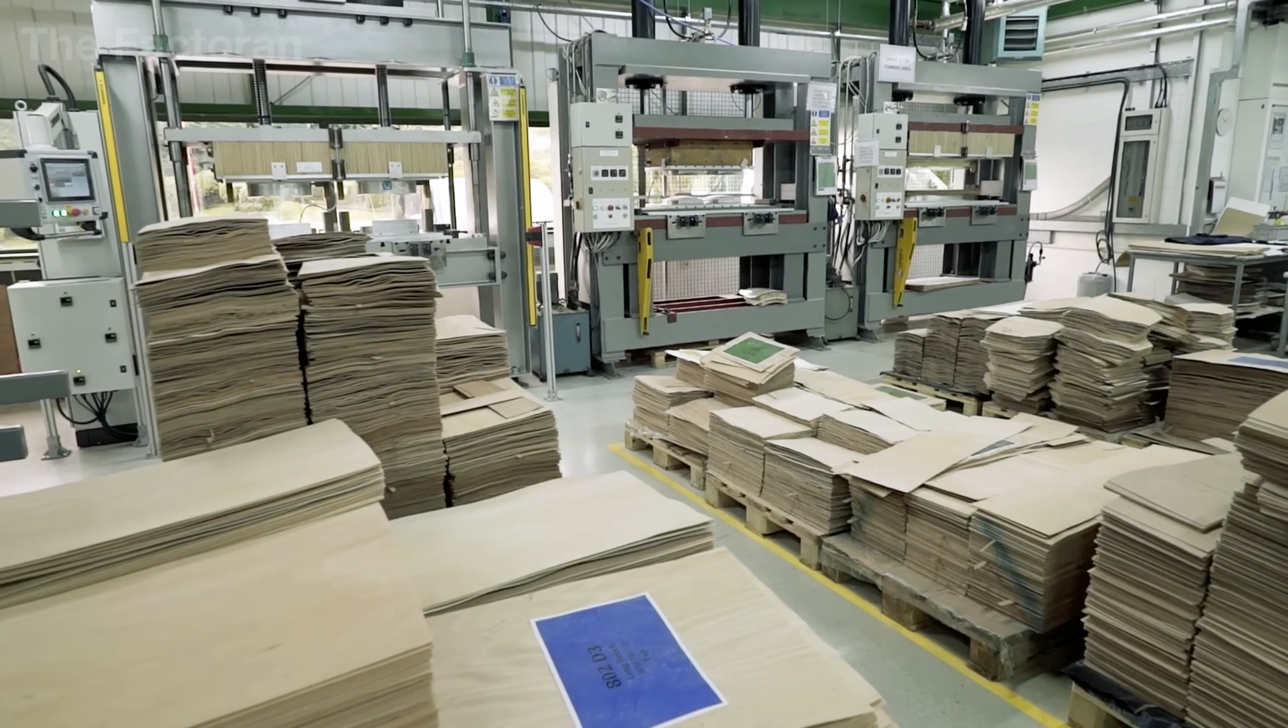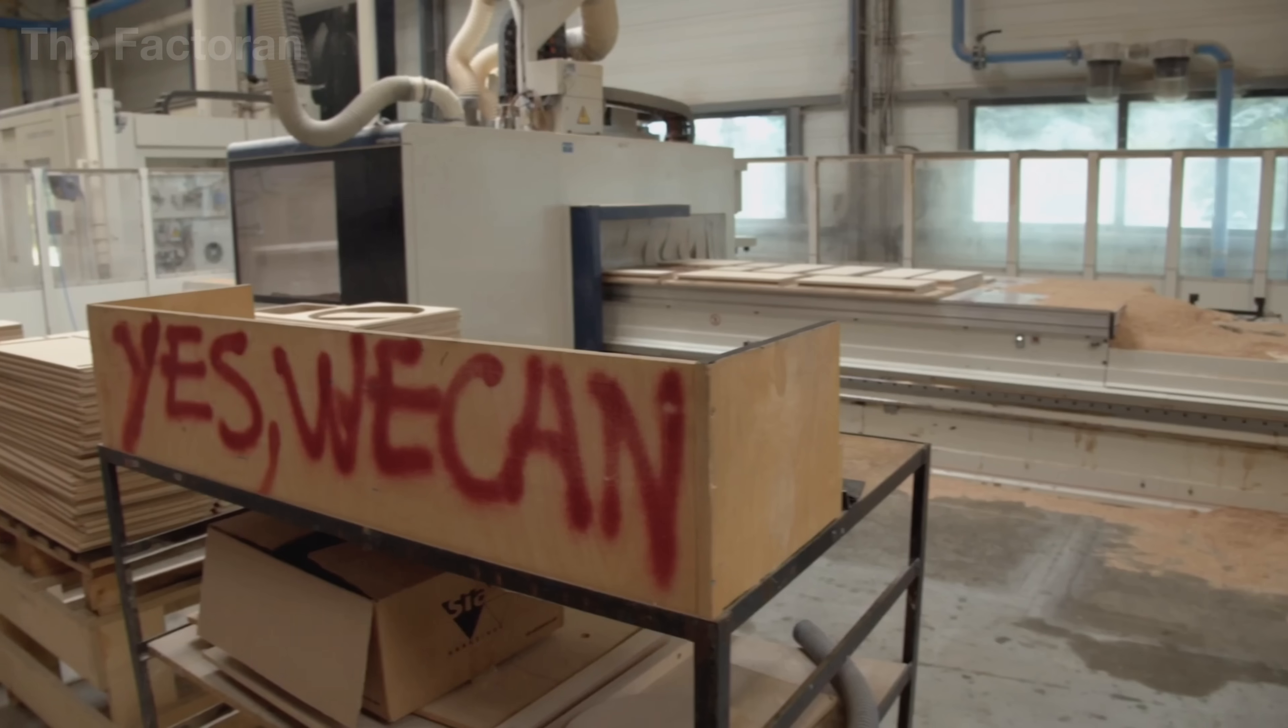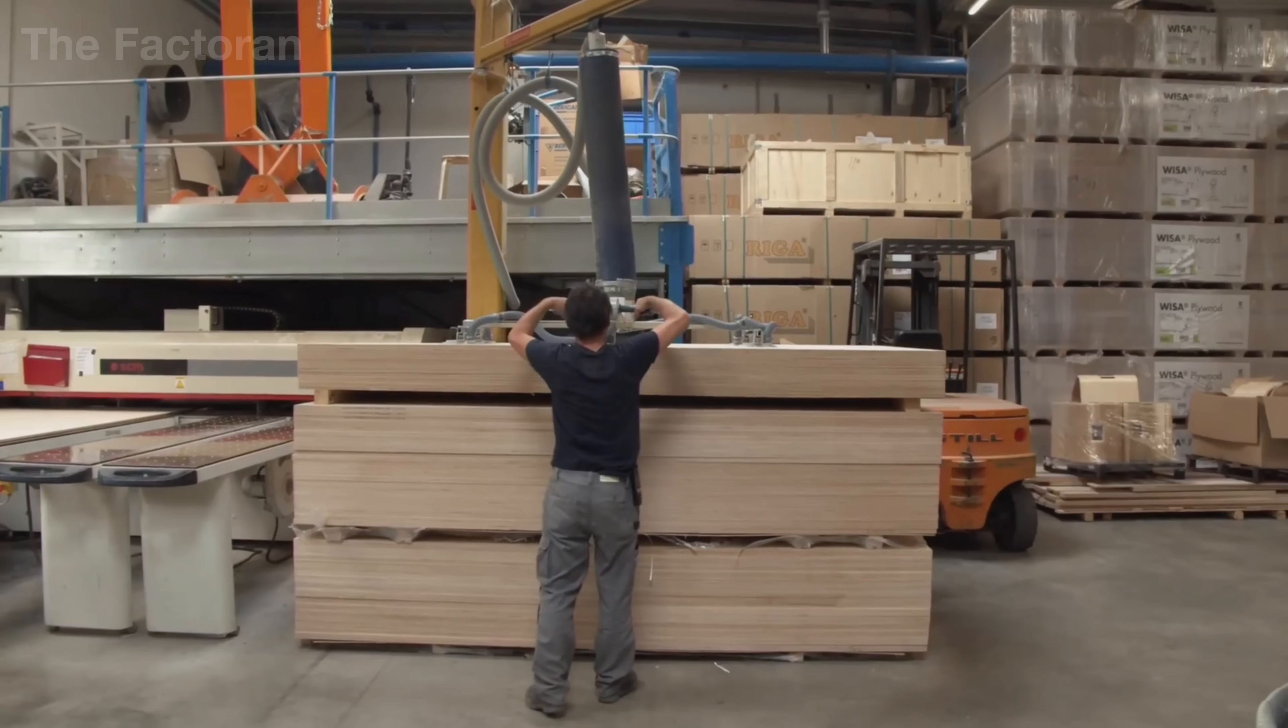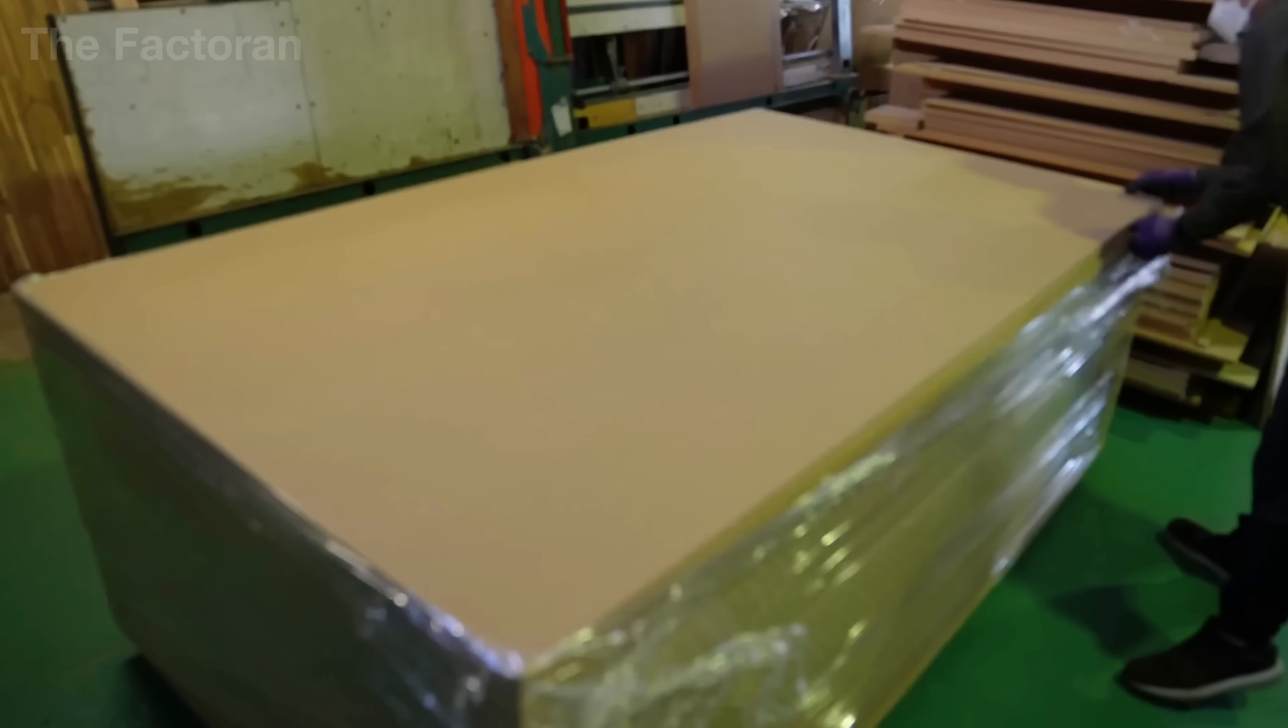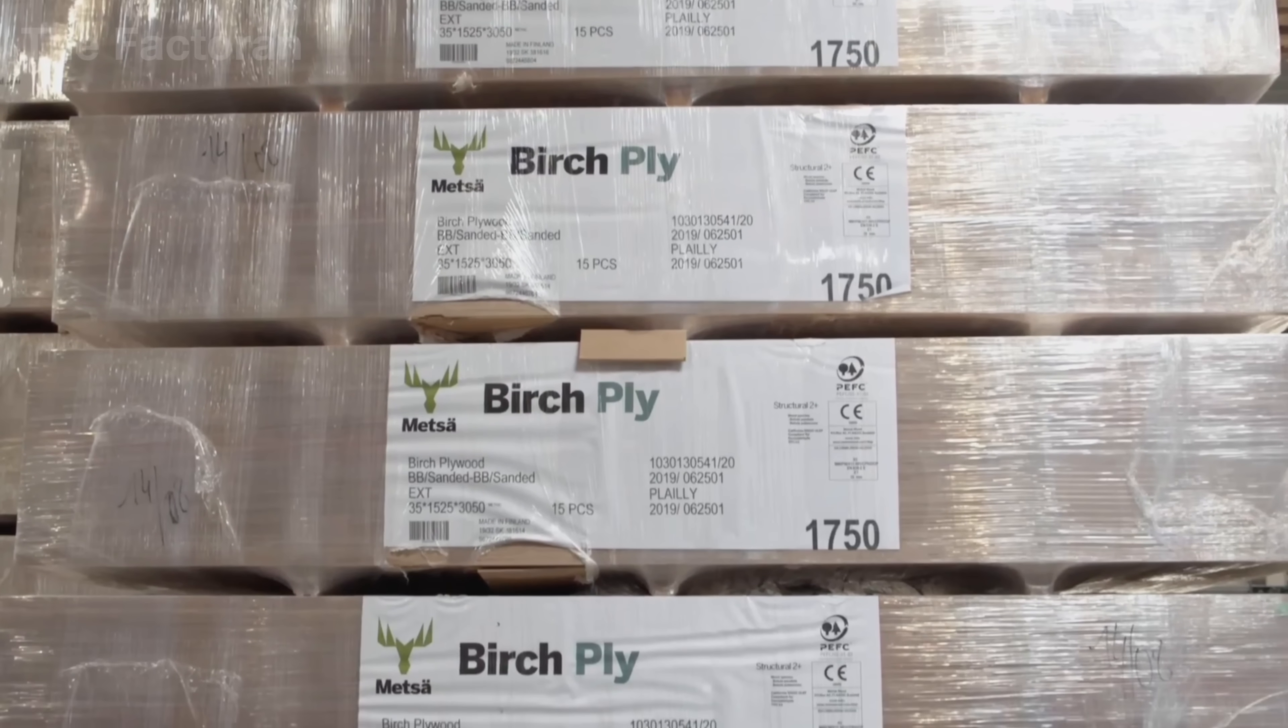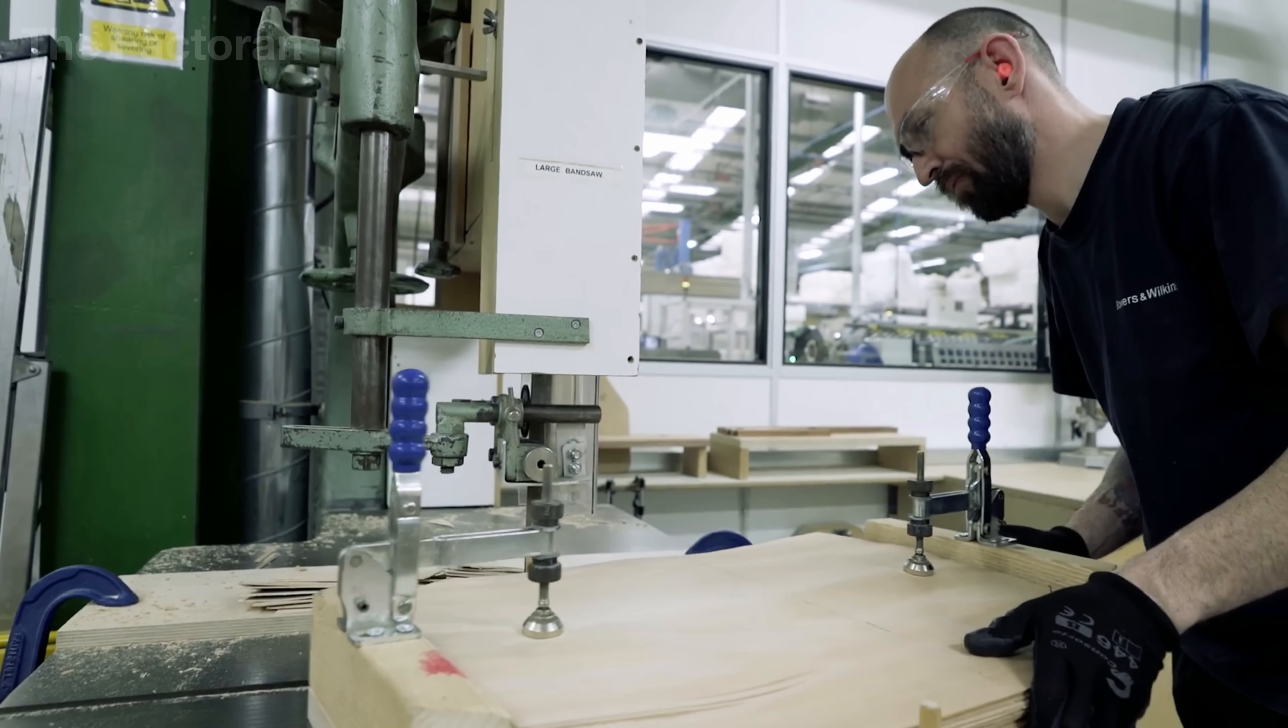With the driver now complete, the production line transitions to cabinet construction, a stage that fundamentally determines the loudspeaker's overall acoustic performance. The most favored materials are MDF or birch plywood, chosen for their structural stability, excellent acoustic properties, and cost efficiency. The process begins by cutting wood panels to exact dimensions using CNC-controlled machinery.